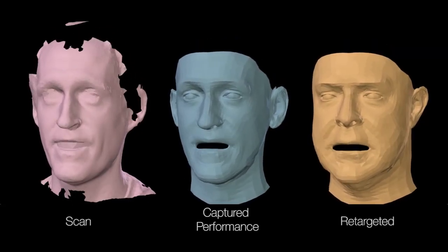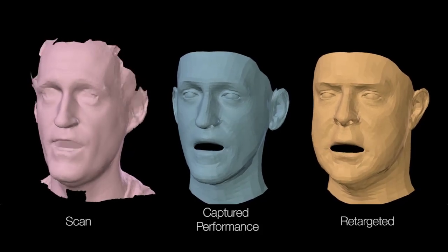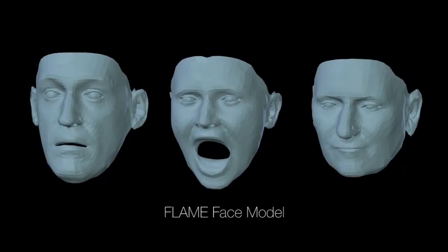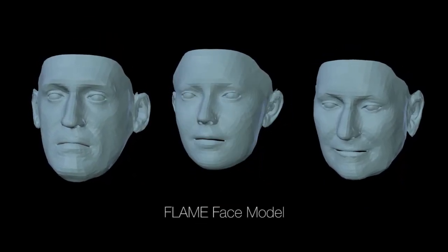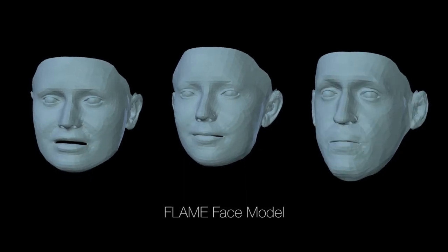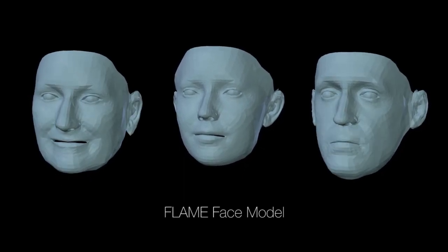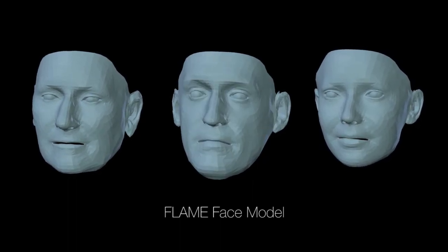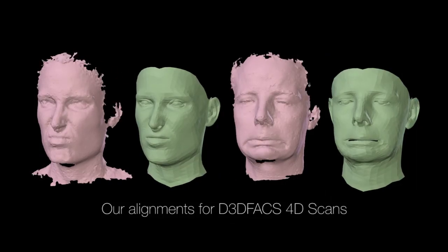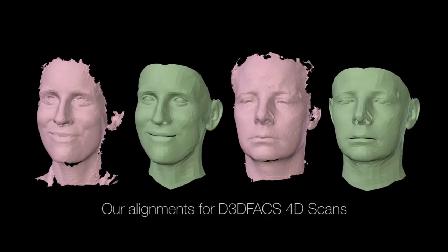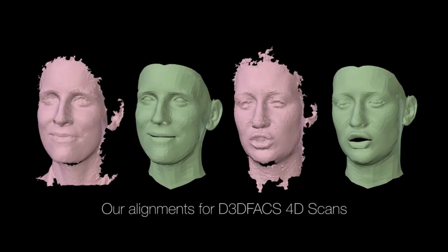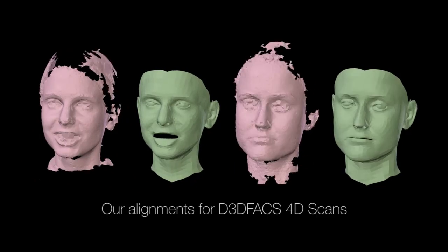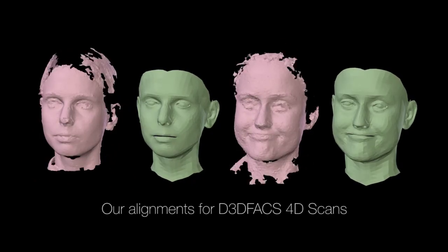We have presented FLAME, a fully learned 3D head, face, and neck model that is no more costly than existing models but is more portable and has much more detail and realism. The identity shape space of FLAME is learned from scans of about 4,000 people, enabling it to generalize well. The pose and expression spaces of FLAME are learned from 3D scan sequences of the D3DFACS database and additional sequences with more variability. We precisely align these sequences using both geometry and texture. Aligning D3DFACS was a significant effort and no public alignment of the data currently exists. We will make these alignments available so other researchers can build new models, and we will make the female and male FLAME models publicly available for research purposes.